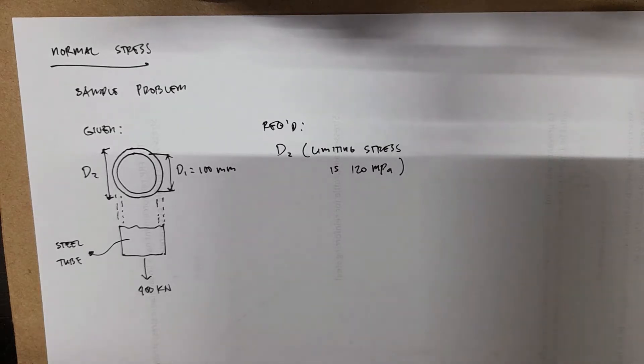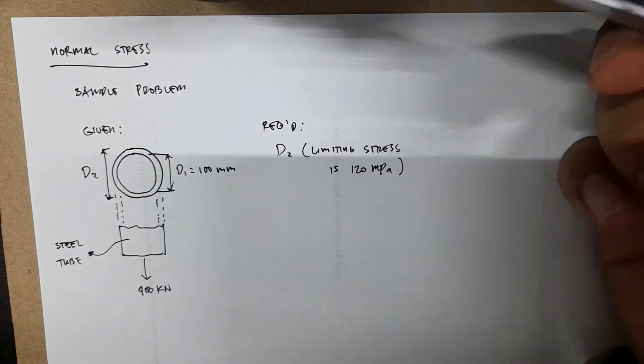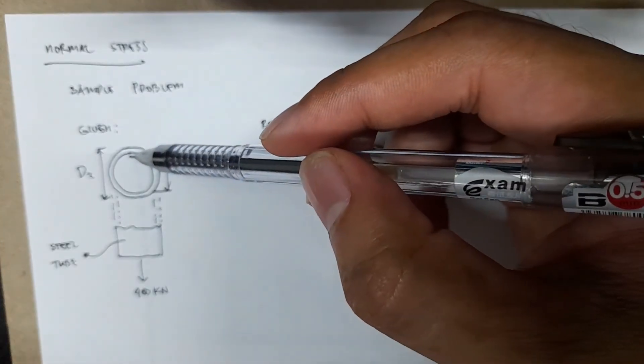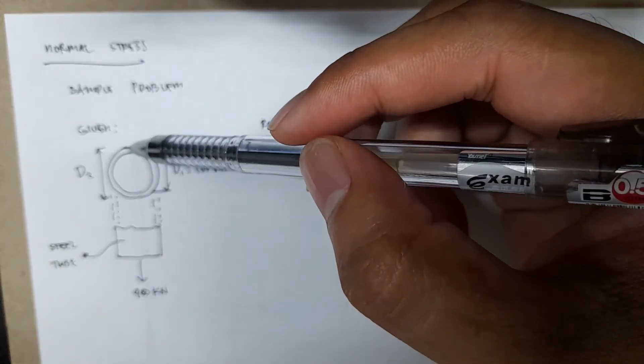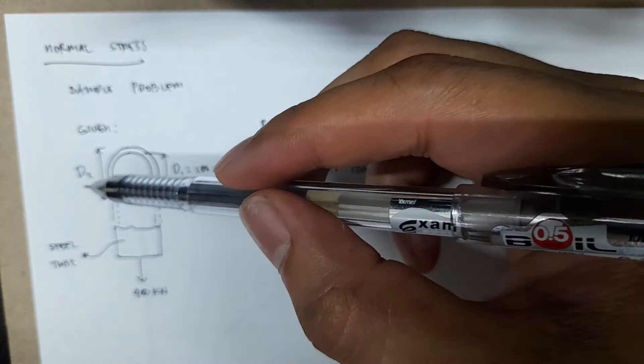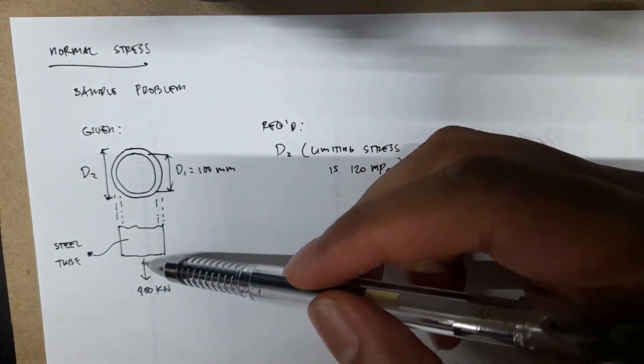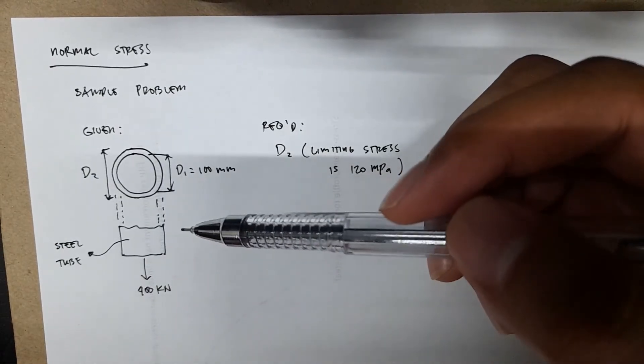We have here an example of normal stress. We're given a hollow steel tube with an inner diameter of 100 millimeters and an outer diameter D2, which is not given. We have a tensile force acting on the steel tube, which is equal to 400 kilonewton.